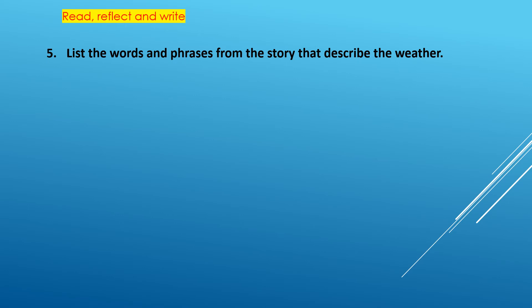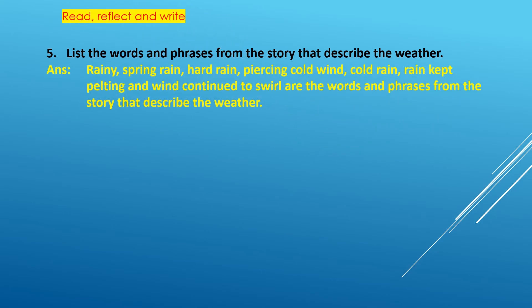Question 5: List the words and phrases from the story that describe the weather. So many words and phrases are used in the story to describe the weather - like cold rain, the rain kept pelting, piercing cold wind, hard rain, spring rain, wind continued swirling. The answer lists: rainy, spring rain, hard rain, piercing cold wind, cold rain, rain kept pelting, and wind continued to swirl - all words and phrases from the story that describe the weather.